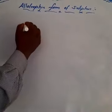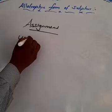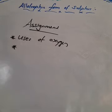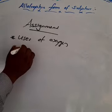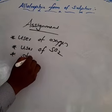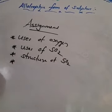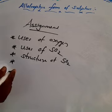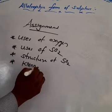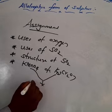Today's assignment: uses of oxygen (page 75); uses of sulfur dioxide; draw the structure of sulfur dioxide; and one important equation on page 77 — sulfur dioxide reduces KMnO4 and K2Cr2O7. These four questions must be learned thoroughly.